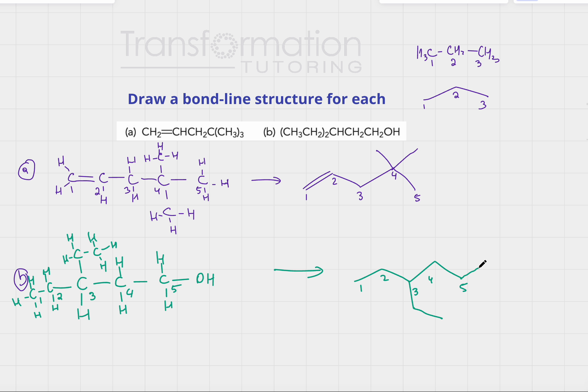Notice this is a valley, so I draw the ethyl group going down. Carbon five has an OH group, so I draw an OH at the end. This is the bond line structure for molecule B. Let me know if this is helpful and what other videos you would like me to post.